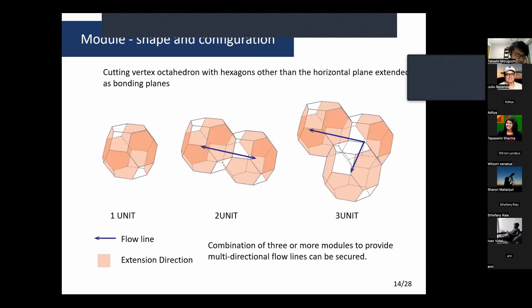A truncated octahedron is composed of hexagons and squares. Of these, the hexagons are combined with each other, so combination of three or more modules provides multi-directional flow lines that can be secured.